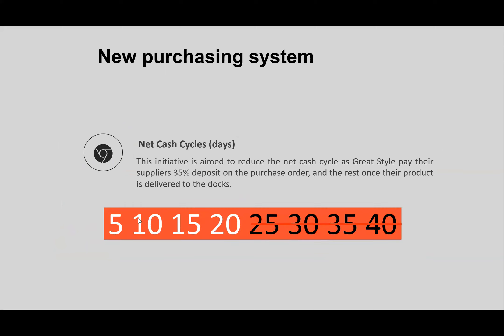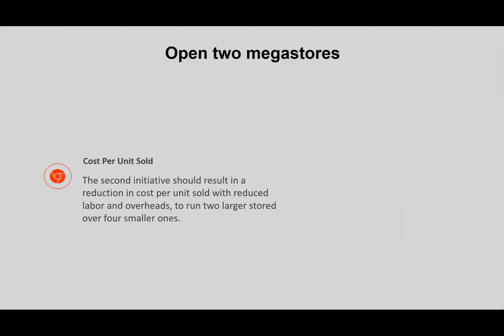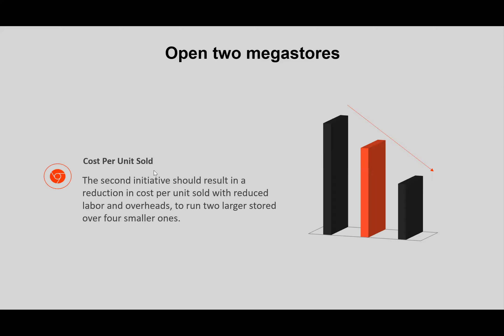The cash generating cycle is 40 days, which is reduced by 20 days. With the deposit structure, you will have 35% of the purchase order. Within the reduction from 8 weeks to 5 weeks, you will have faster delivery. So in this month, the cash generating cycle was reduced from over 40 days to 20 days. The second initiative should result in a reduction in the cost per unit sold, reducing the overhead to run two larger stores over four smaller ones.